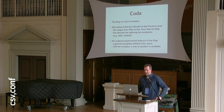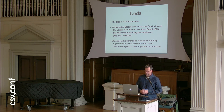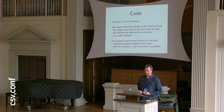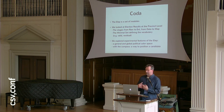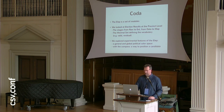Just a quick recap: the election project is a set of modules. We looked at election results at precinct level, the stages from raw to ext, from data to the map. The minimal set, which really tries to define things very clearly so that we can use them everywhere in the world. And then some more experimental features — a general global political color space — so that everyone can see, when he looks at the map, what's really happening and what's happening over time, with a compass to position candidates and to see how they change.